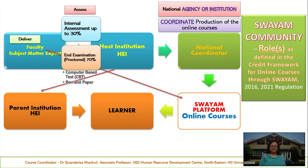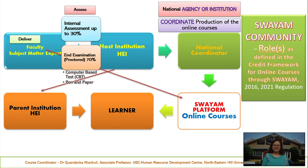The end examination is a proctored examination — one that is supervised — and it is performed at the end of the entire course. It is conducted at a center outsourced by the SWAYAM board, with centers located across every corner of the country, so that learners from any part of the country can complete this proctored examination. In most cases the end examination is a computer-based test, while some course coordinators prefer a pen-and-paper examination.